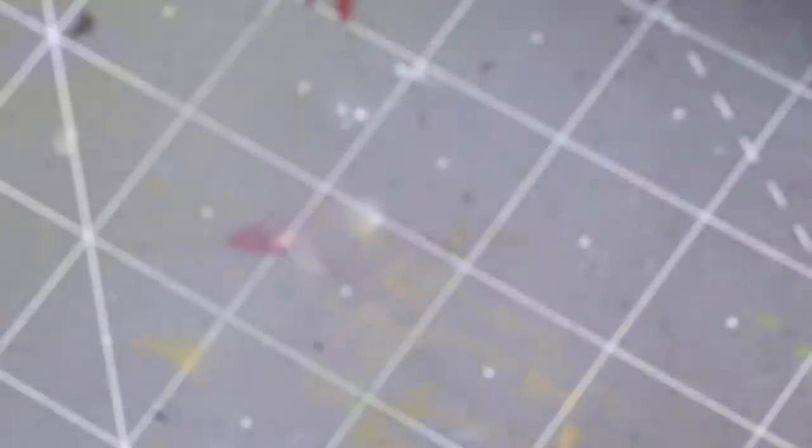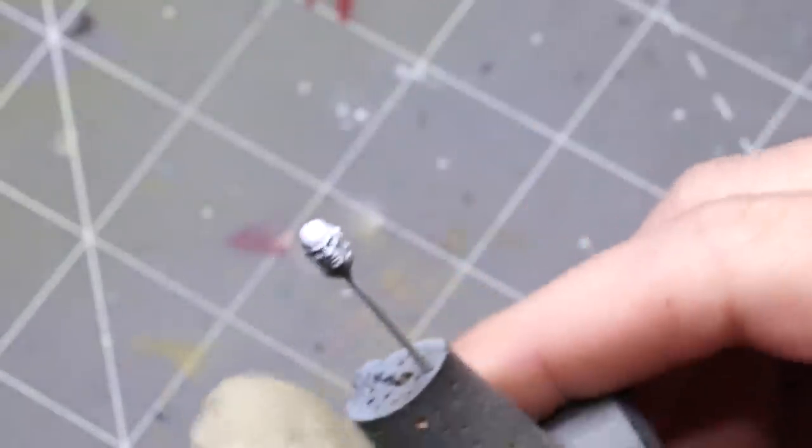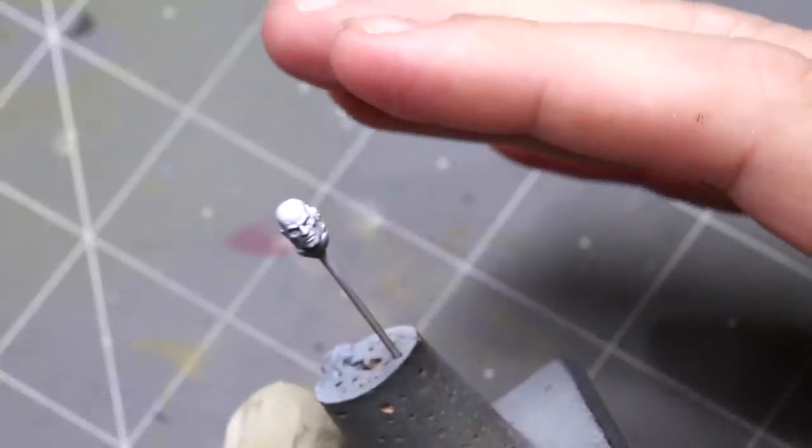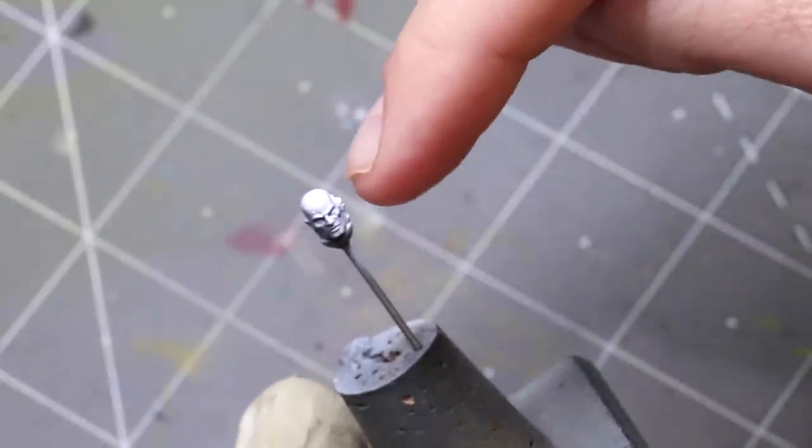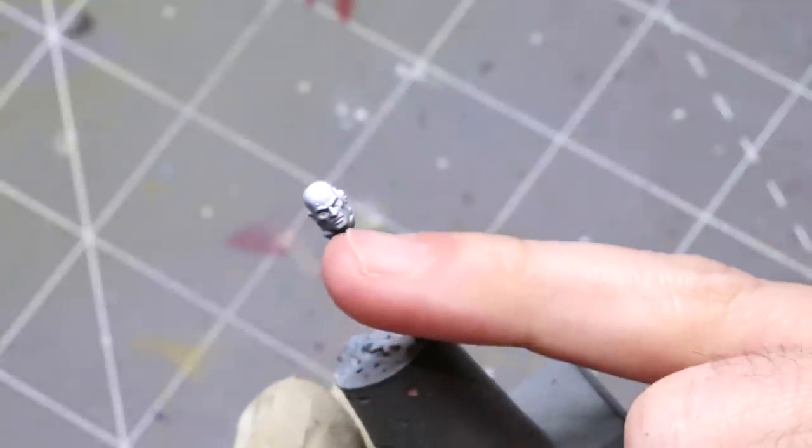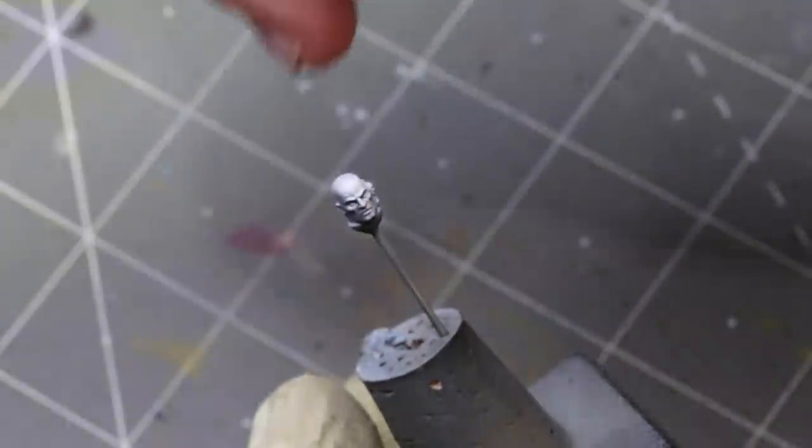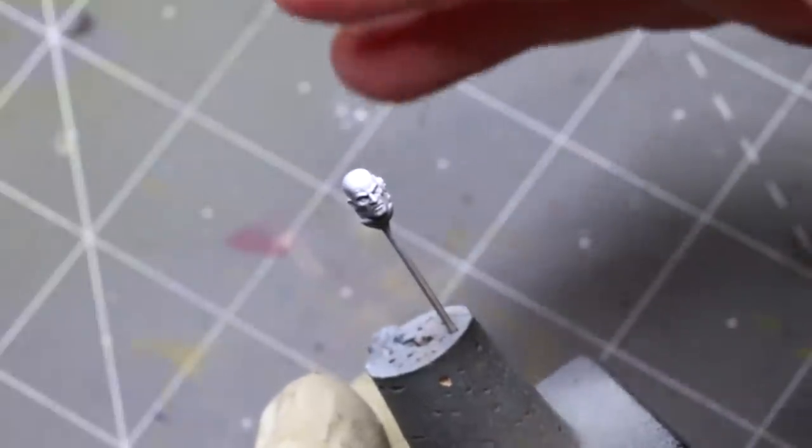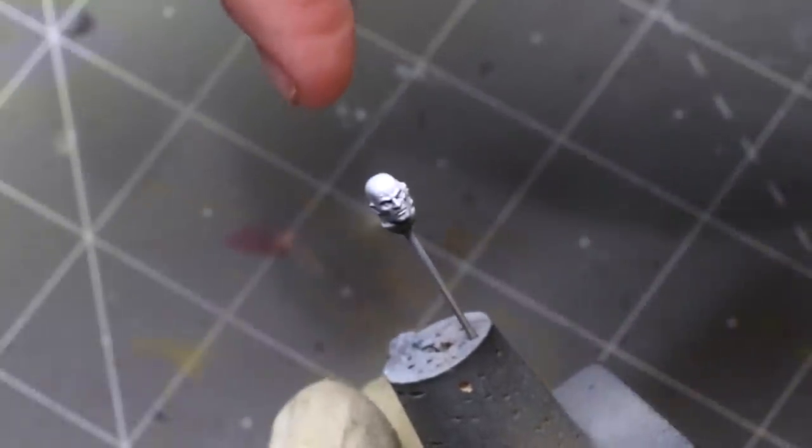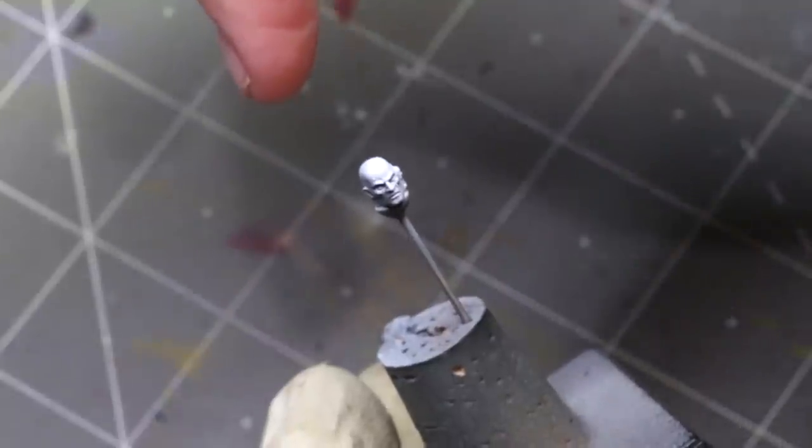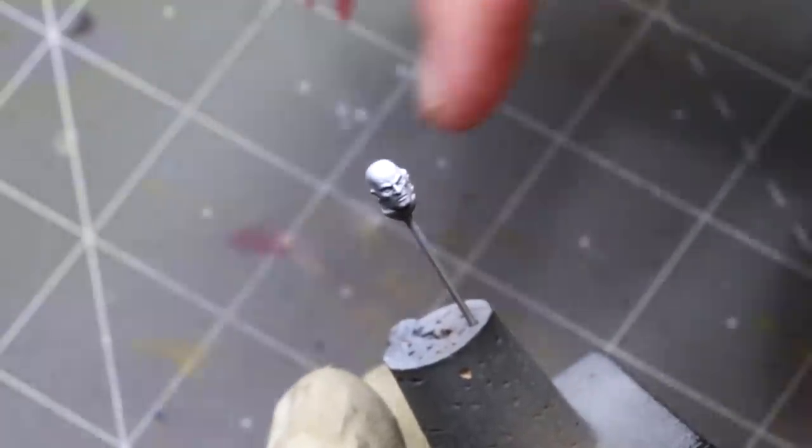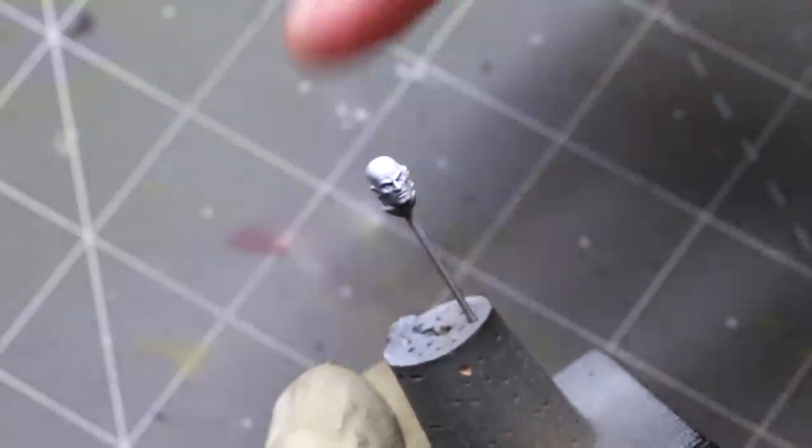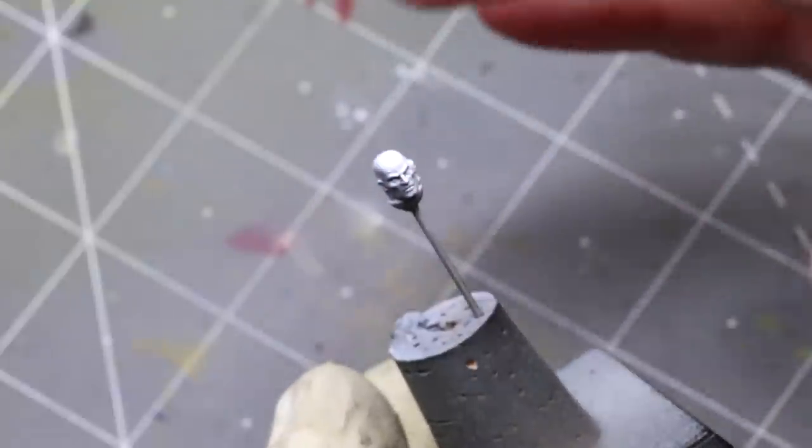I've started with just a basic zenithal highlight here, coming from one side so you'll notice he's a little bit heavier shadowed here. I don't generally like to come straight from above because straight from above is kind of boring and the light would only truly be there during a very small portion of the day. A slight angle often helps.